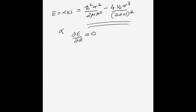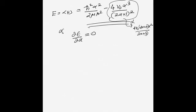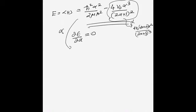Applying the quotient rule — derivative of numerator times denominator minus numerator times derivative of denominator, all over denominator squared — and rearranging, the derivative of the second term gives 4V₀(2α+3)α²/(2α+3)³. This is left as an exercise for the student.